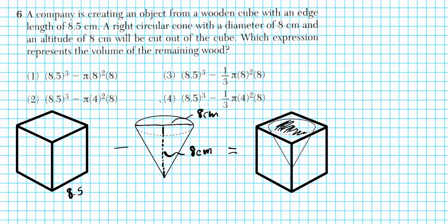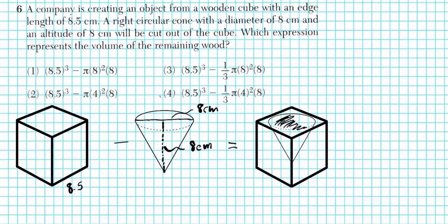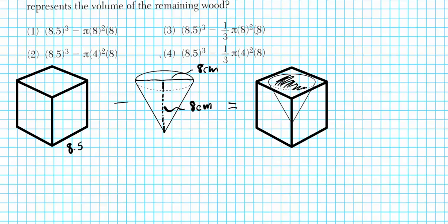In this problem we're going to let our formulas guide us. The volume of a cube is the side length raised to the third power. From that we're going to be subtracting the volume of a cone, which is one-third π r² h — one-third of the area of the base π r² times the height h.